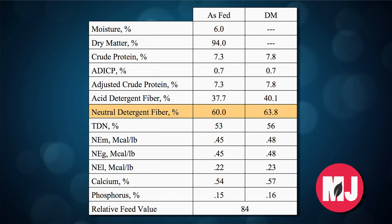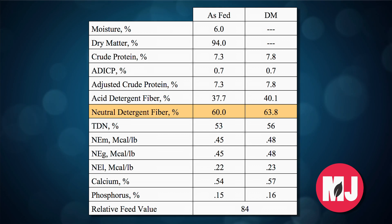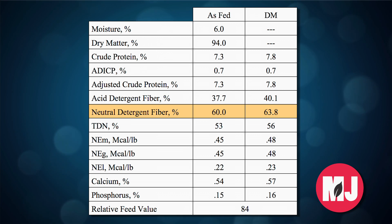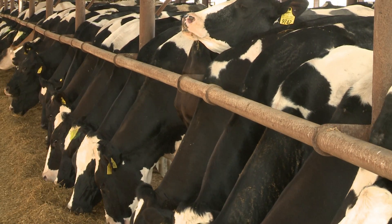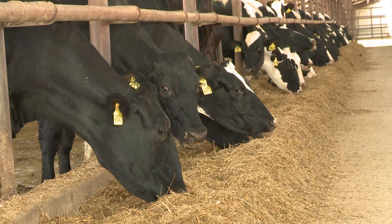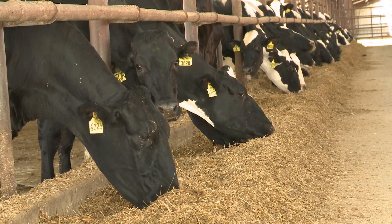In contrast, NDF or neutral detergent fiber adds all the fiber together, and that tends to indicate kind of the bulkiness of the ration, which leads to fill in the animal and affects how much that animal is going to be able to consume. This becomes maybe more important for dairies, but when the numbers start getting very high it can influence how much cows can eat if we're trying to maintain beef cows during the winter as well.